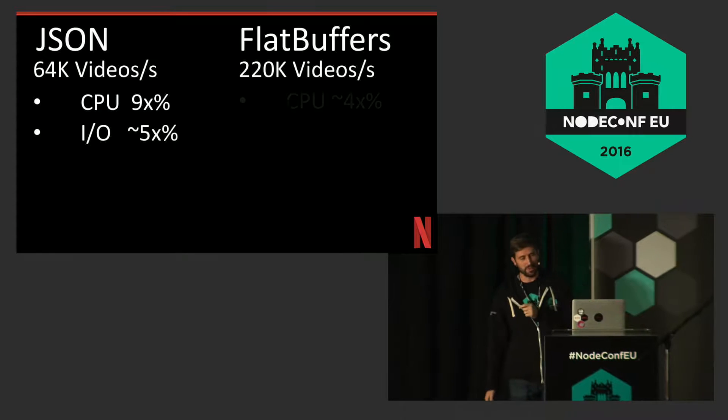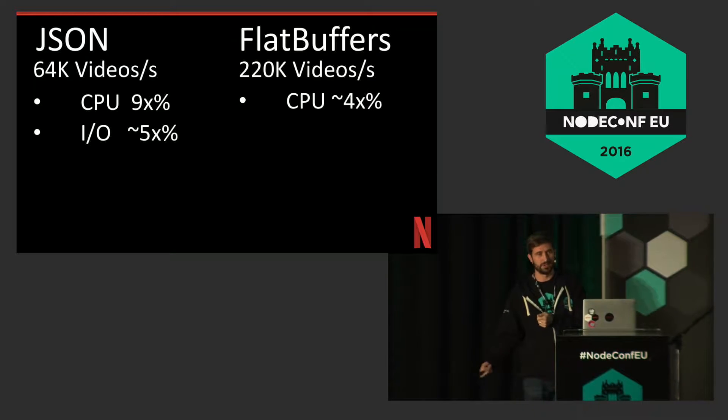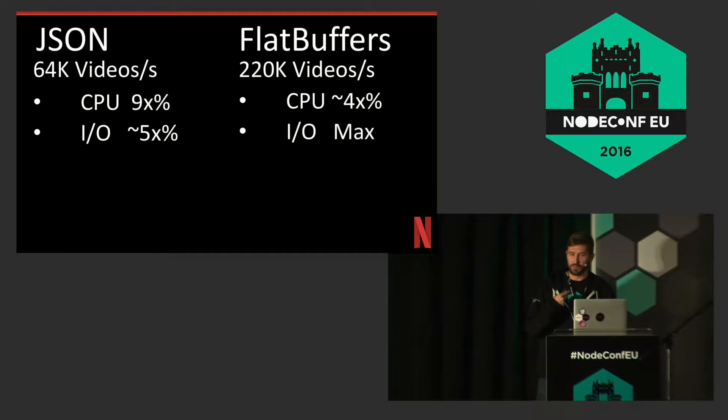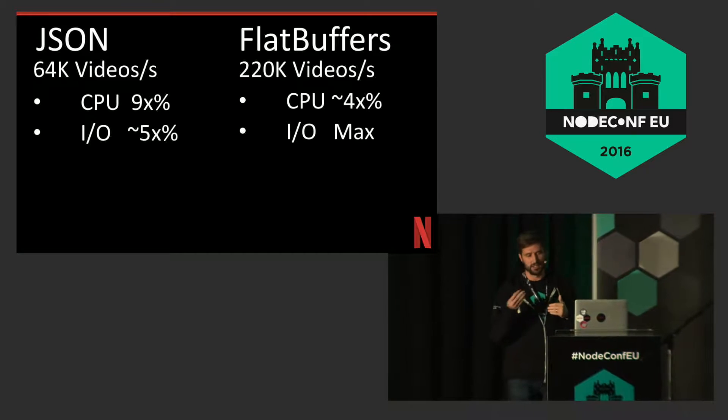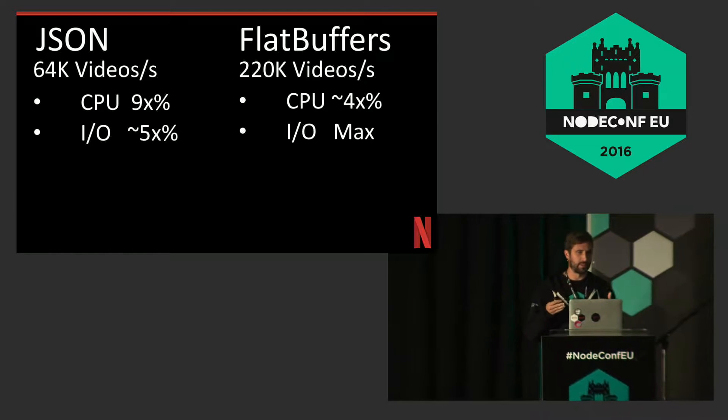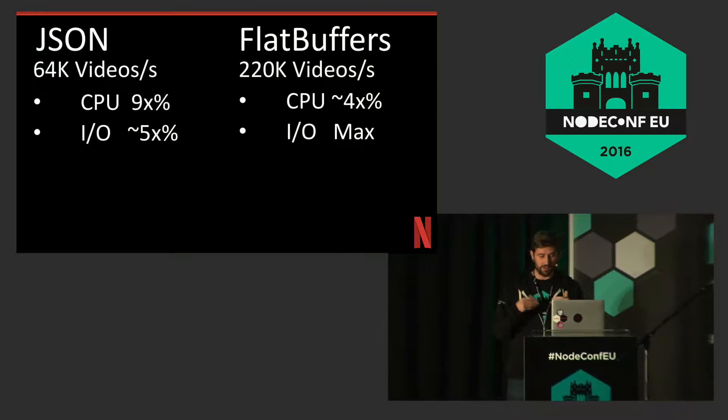With FlatBuffers I could max it out at roughly 220,000 videos per second, and I was only using 40% of the CPU. I was maxed out on I/O because the M3 large on AWS has a 500 megabit communication pipe, so I couldn't go any faster. If I had built in compression, I probably could have seen that 220,000 cook up to about 400,000 videos per second — which is significantly faster than JSON.